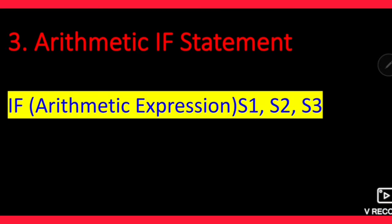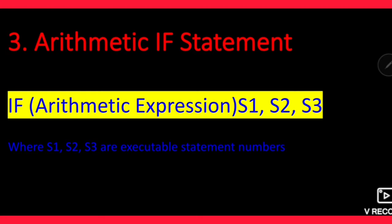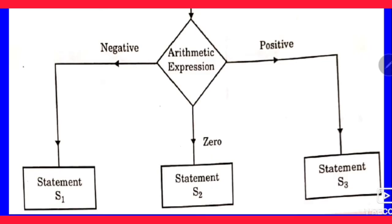Its general form is: you write the word IF, and inside the bracket there is an arithmetic expression, followed by s1, s2, s3. These are separated by commas and are executable statement numbers. So this is the syntax to write the arithmetic IF statement, where s1, s2, s3 are executable statement numbers. You can also understand it in the form of a flowchart.